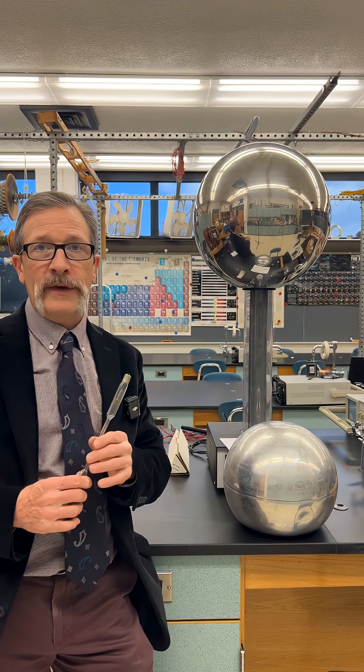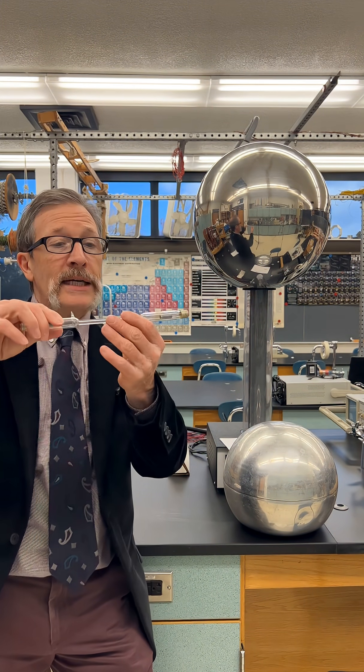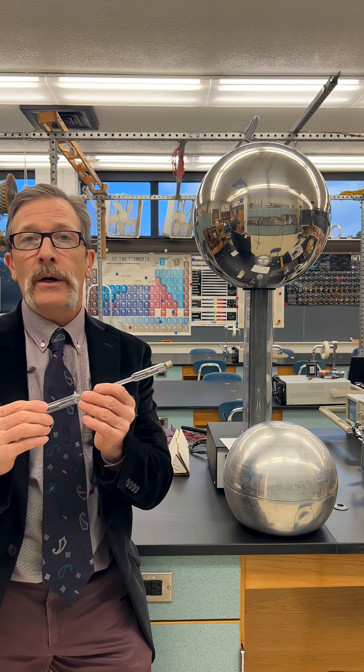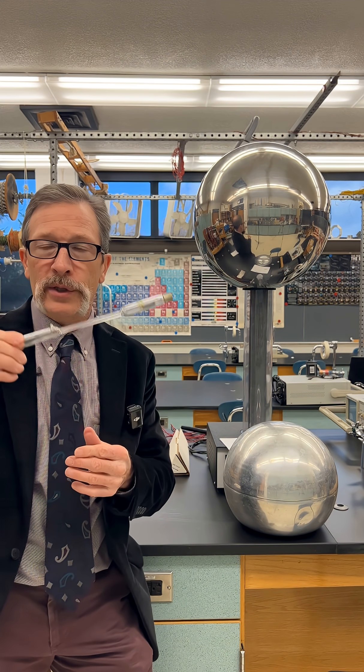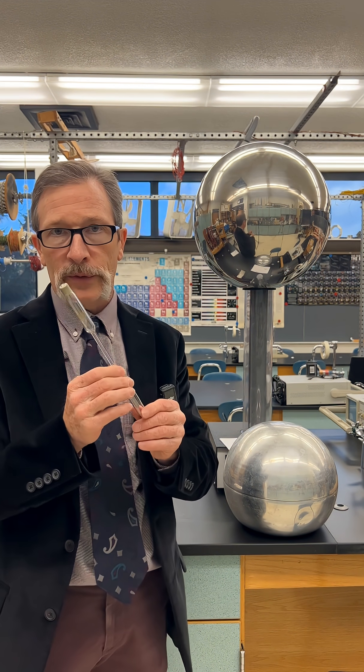For today's quiz I've got a very large Van de Graaff generator. I also have a glass mercury bulb. Our question simply is, if the Van de Graaff generator has charges on it and I want this to illuminate, what configuration should I hold the bulb?